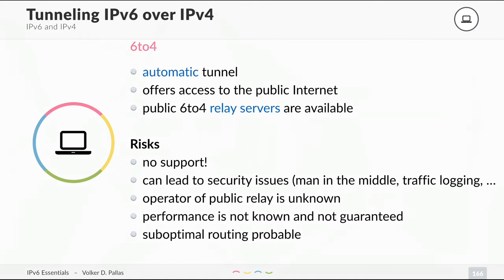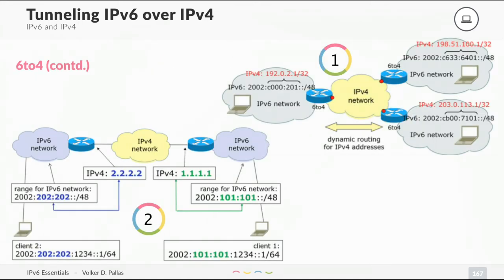Let's have a look at how 6to4 works. We have IPv6 networks on the left, top, and bottom, and in the middle an IPv4-only network — maybe the internet. Networks using 6to4 are always addressed from the prefix 2002::/16. The next two parts are comprised of the IPv4 address in hexadecimal notation — for example, 192.0.2.1 is translated into C000:0201.